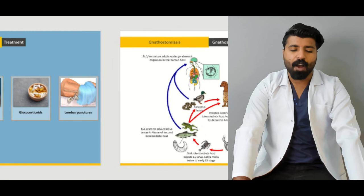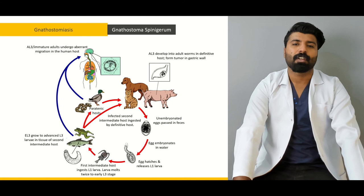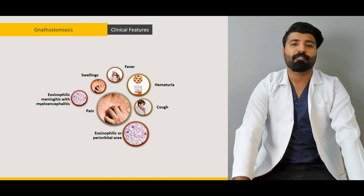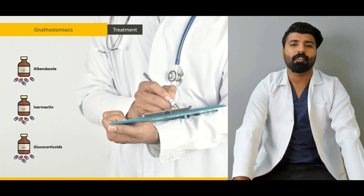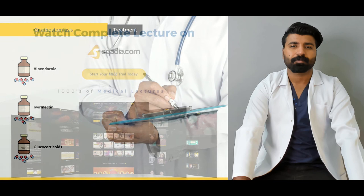Next, we're going to talk about the treatment options we have for angiostrongyliasis. Afterwards, we'll go to gnathostomiasis — what organism causes it, what is the life cycle, how many hosts it goes through, how it reaches the human body, what pathological manifestations it presents with, what clinical features to look for, what diagnostic modalities we use, and how we treat such patients in both medical and surgical terms.